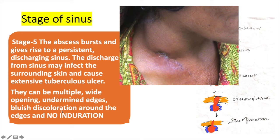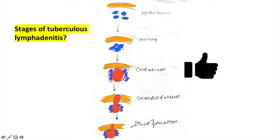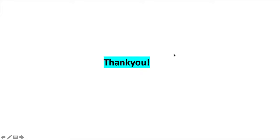With this we have completed all the stages of tuberculosis lymphadenitis. Try to recall: firm non-tender palpable swelling → matting → caseating necrosis leading to cold abscess → piercing the deep fascia to form collar stud abscess → finally rupturing through the skin to form a sinus. If you got these right, you're absolutely right. If not, just rewind and review.